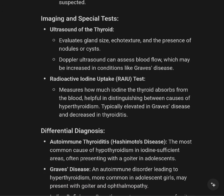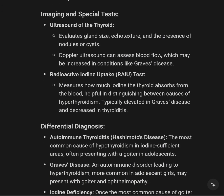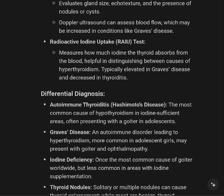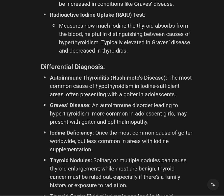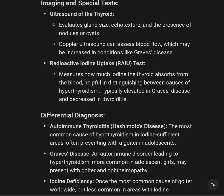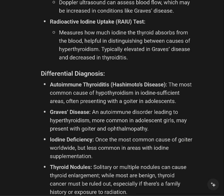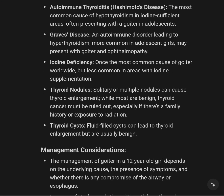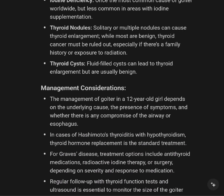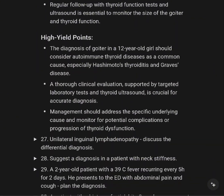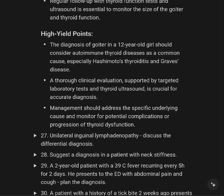Imaging and special tests: Ultrasound of the thyroid evaluates size, echo-texture, presence of nodules and cysts. Doppler ultrasound assesses blood flow. Radioactive iodine uptake test — RAIU — measures how much iodine the thyroid absorbs. Differential diagnosis includes autoimmune thyroiditis, Hashimoto's disease, Graves' disease, iodine deficiency, thyroid nodules, thyroid cysts, and possible cancerous issues. The diagnosis of thyroid enlargement in a 12-year-old must consider these possibilities.